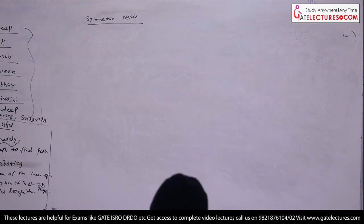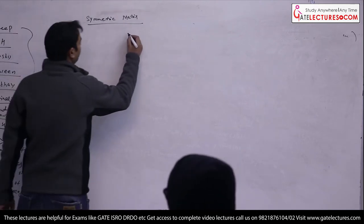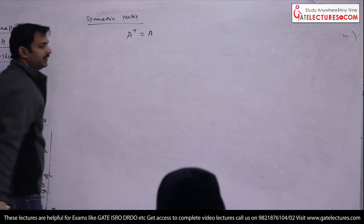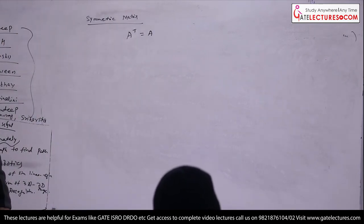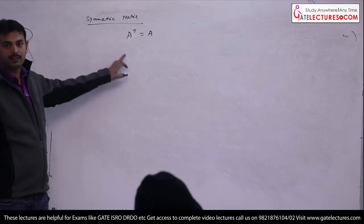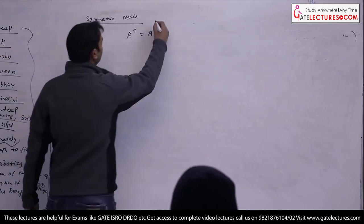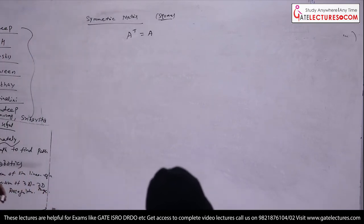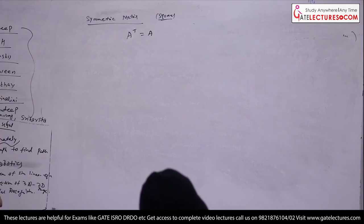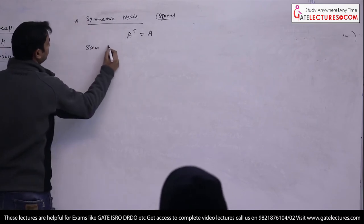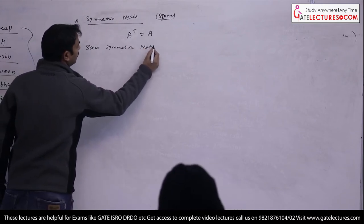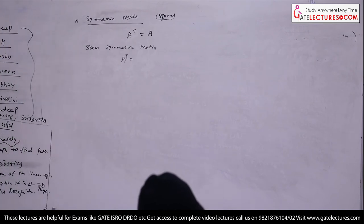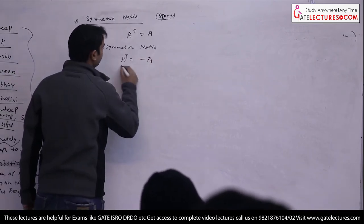Now, what is a symmetric matrix? A transpose is equal to the same matrix — the matrix and its transpose are equal. If when you find A transpose it becomes A again, then A is said to be a symmetric matrix. For a square matrix only. Then what is a skew symmetric? A transpose equals minus A.